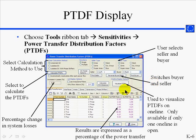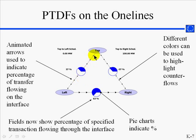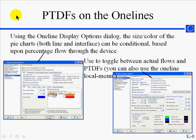This slide summarizes some of the features on the PTDF dialog. In addition to the ones we discussed, you can also click a button to reverse the buyer and seller and then recalculate the PTDFs. This slide shows PTDFs on an area one-line diagram with interfaces shown between the areas. In this example, a transfer is modeled between area left and area right, and the results show that 63% of that transfer takes a direct path on the tie lines, while 37% loops through area top. The one-line display options can be used to show how PTDFs will be displayed on the one-line diagram.